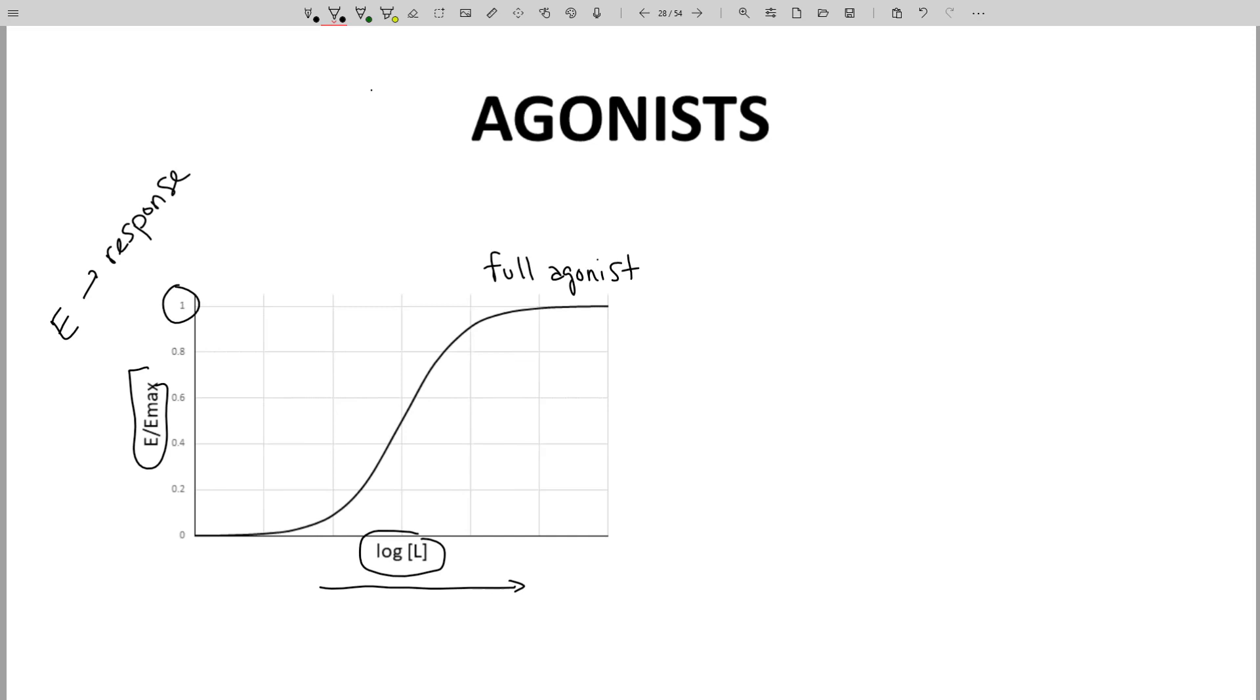The result is a sigmoid-shaped curve. The inflection point of the curve occurs at 50% response and at an x-value called EC50. In this case, it's log EC50. This is the concentration required for 50% or 0.5 effect or response.